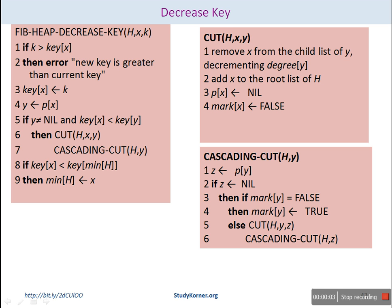The decrease-key operation of a Fibonacci heap will decrease a key of any node with key X to K, where K is the given key and X is the existing key. This procedure is applied on Fibonacci heap H with key X and the key which is to be decreased is K. First, we need to check whether K is greater than the key of X.